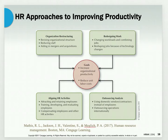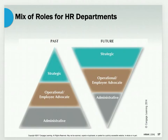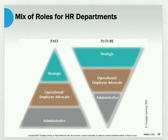As we reduce the administrative load in organizations, the strategic role of HR — seen at the top of the triangle — was historically very small, while the administrative load was much bigger. Now the strategic role is growing. The operational role also includes being an employee advocate. When we look at the role of an HR manager within an organization, it's roughly a 51–49 split: 51% representing management and 49% advocating for the employee.